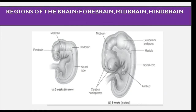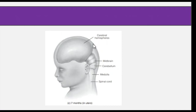There are three regions of the brain: forebrain, midbrain, and hindbrain. Through five weeks inside of the womb, you will develop these regions of the brain. However, as you grow older inside of your mother's womb, these regions expand and evolve. This is how the brain looks with its cerebral hemisphere, midbrain, cerebellum, medulla, and spinal cord.